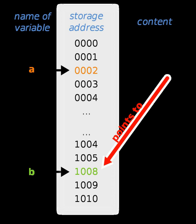In particular, it is often much cheaper in time and space to copy and dereference pointers than it is to copy and access the data to which the pointers point. Pointers are also used to hold the addresses of entry points for called subroutines in procedural programming and for run-time linking to dynamic link libraries.